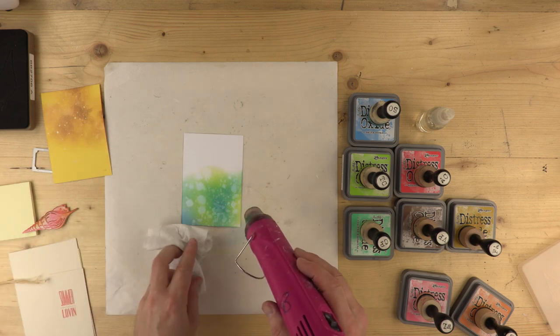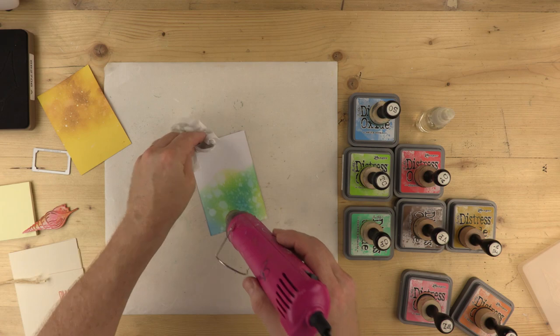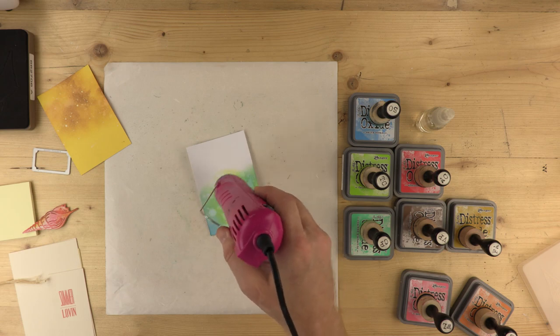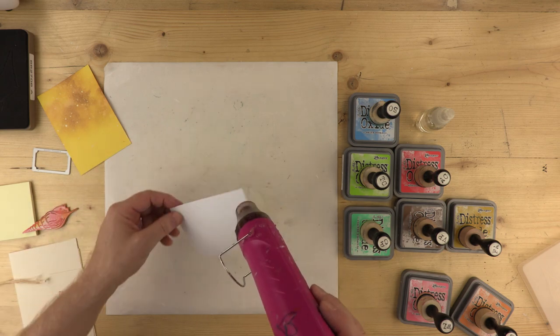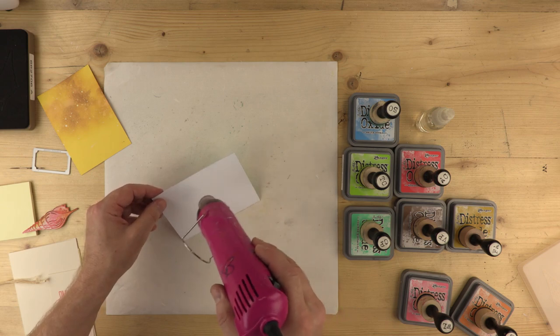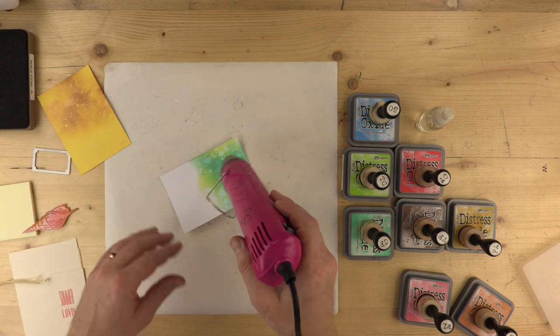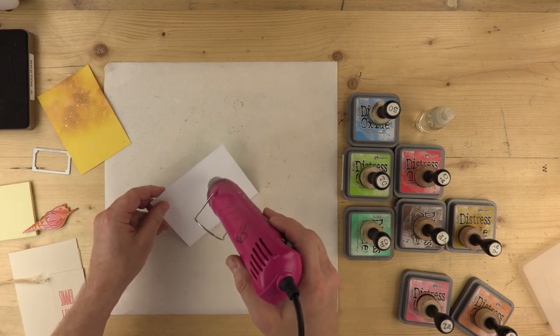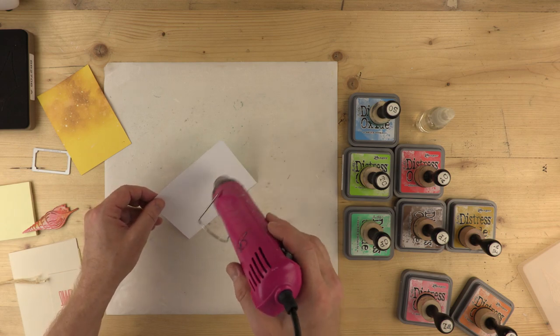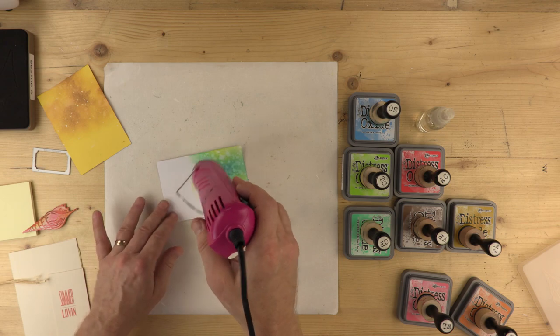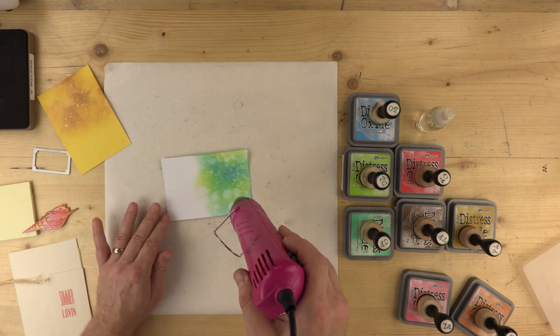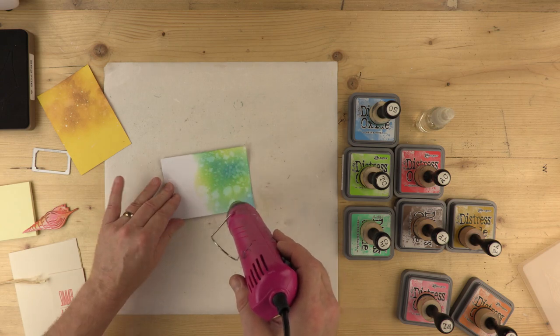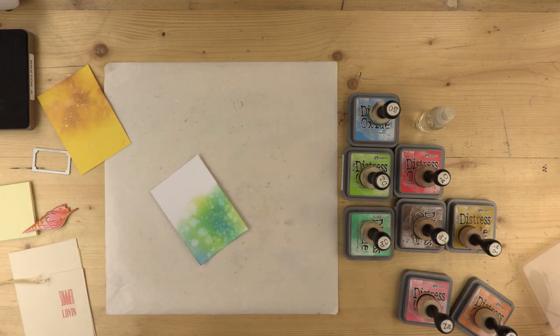It's quite good to dry both the back and the front of the card with your heat tool, because it evens out any warping. Inevitably, when you use water on card, unless it's the heaviest of watercolour papers, it's going to warp slightly. But we want to avoid that as much as possible. And there we have it. That's all dry now.